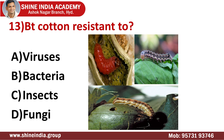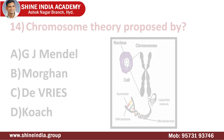Question number thirteen: Bt cotton is resistant to? Bt refers to Bacillus thuringiensis. We have the pests — the pink bollworm, spotted bollworm, and the American bollworm. These are the three major pests which can affect Bt cotton. Bt cotton is resistant not against viruses, bacteria, or fungi — it kills insects of particular bollworm species, because the bollworm effect is much more significant compared with other insects. The answer is insects.